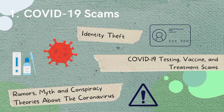First is COVID-19 scams. The world is still facing the COVID-19 pandemic, which not only creates health issues but also gives scammers opportunities to take advantage of you. They might get in touch by phone, emails, postal mail, text, or social media. Scammers change their methods frequently, and current COVID-19 scams include: identity theft, COVID-19 testing, vaccine and treatment scams, and rumors, hoaxes, and conspiracy theories about the coronavirus.